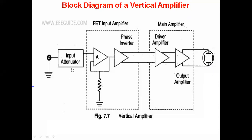After the input signal is attenuated, it is given to the FET input amplifier. In the FET input amplifier we have a FET source follower. It separates the input side and the output side because it offers high input impedance. That's why it isolates - if any loading effects occur, those will be reduced. That's why we use the FET source follower.